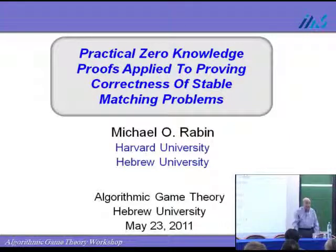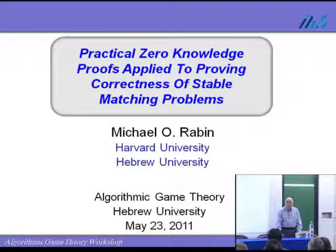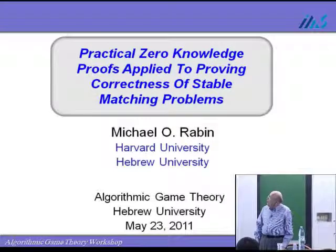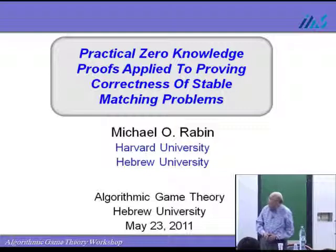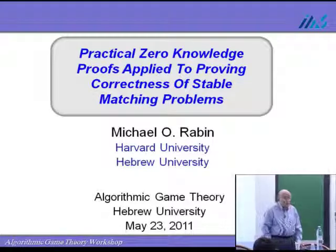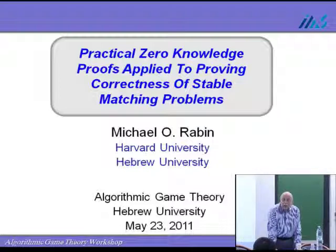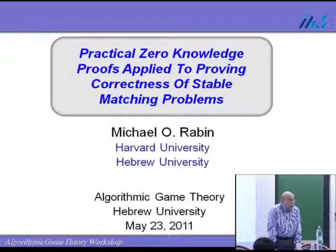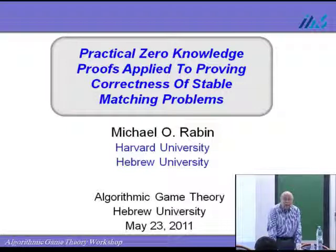Today I'll be talking about, as the title says, practical zero-knowledge proofs, applied to proving correctness of stable matching problems. But this is actually a method — or if you want, a technology — which we hope is going to have wide-ranging applications, as I'll hint at later on, to areas such as mechanism design, the conduct of correct auctions, and many other possible applications.